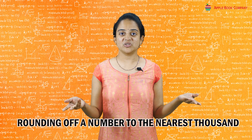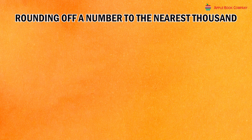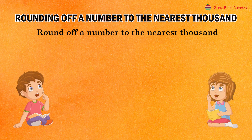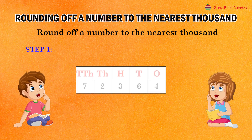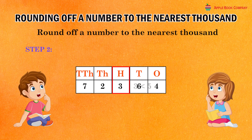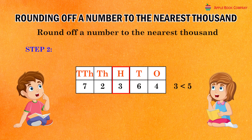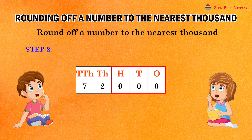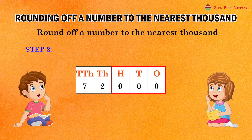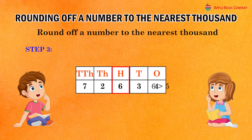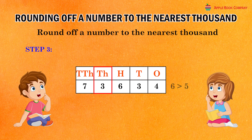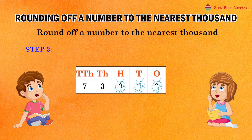Rounding off a number to the nearest thousand. To round off a number to the nearest thousand, we follow the following steps. See the hundred's digit of the given number. If the hundred's digit is less than five, replace each one of the hundreds, tens and one's digits by zero and keep the other digits as they are. If the hundred's digit is five or more, increase the thousands digit by one and replace each digit on its right by zero.